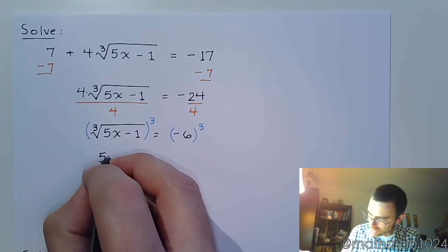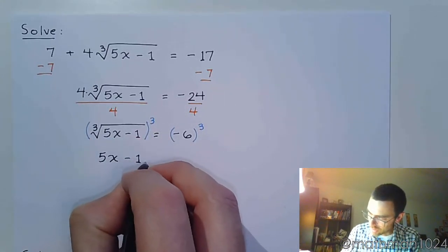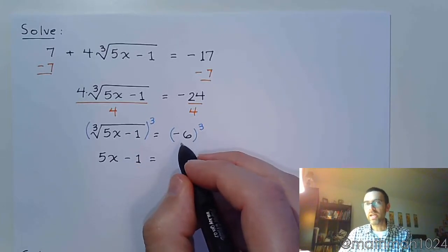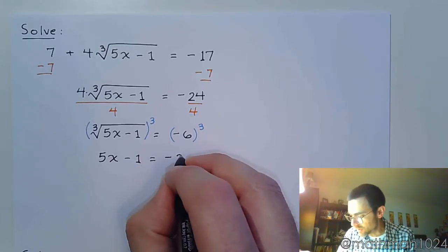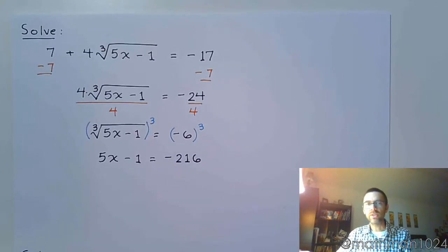And that gives me 5x minus 1. And on the right side, negative 6 to the third is negative 216.